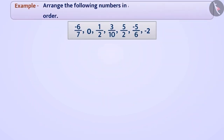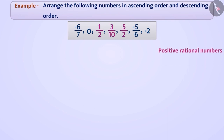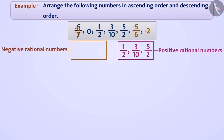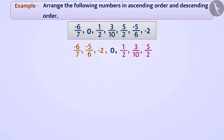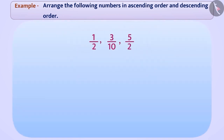Next example: arrange the following numbers in ascending and descending order. To make the comparison of these numbers easy, we will separate the positive rational numbers from this group and express them in order. Similarly, we will separate the negative rational numbers from the group and arrange them in the same order. As we know, negative numbers are smaller than 0 and positive numbers are greater than 0.